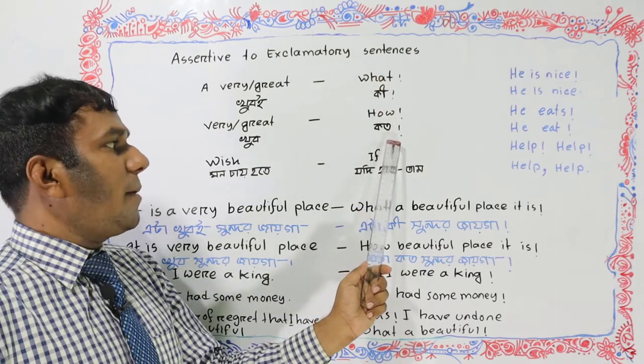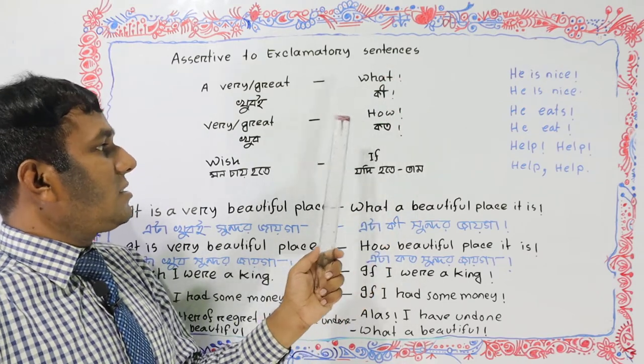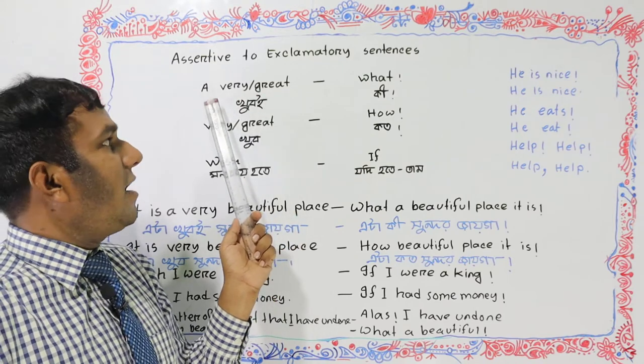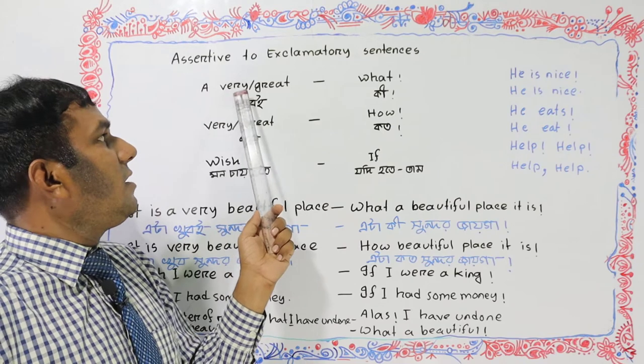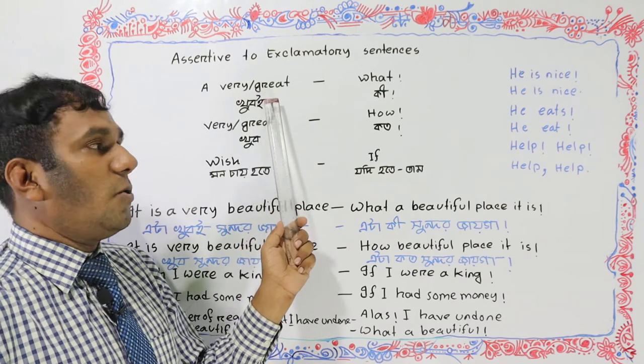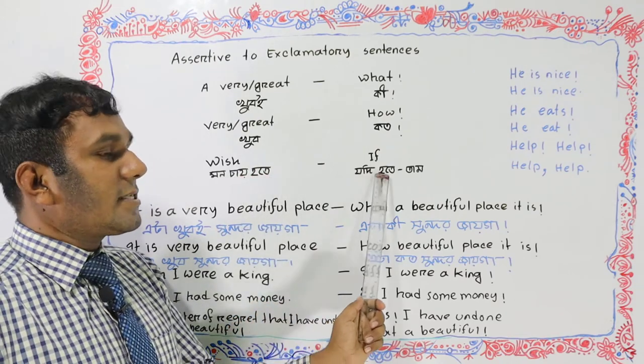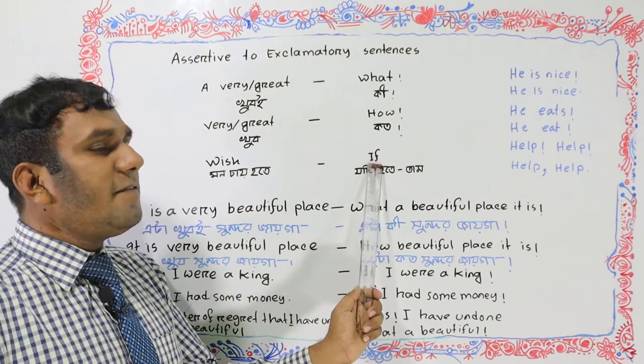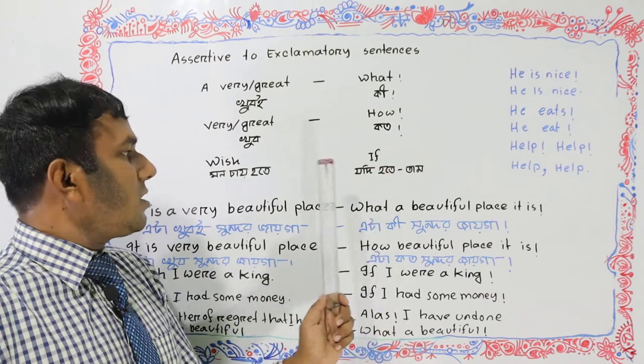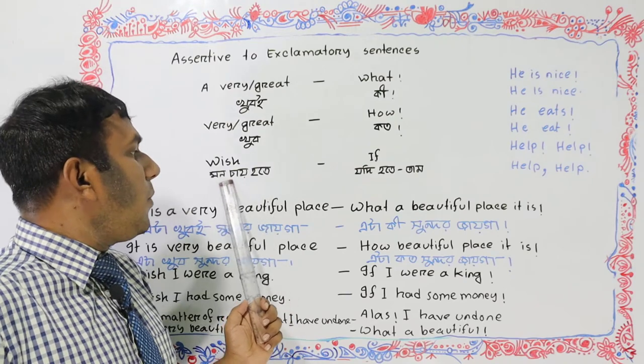In exclamatory sentences, if there are words like 'very' or 'great', we convert them. For assertive sentences with 'wish' and past tense, if it was 'wish', it will become 'if'. The past tense remains in the transformation.